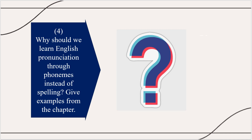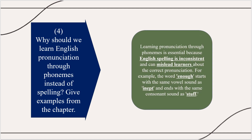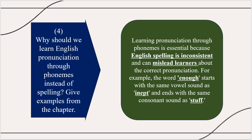Why should we learn English pronunciation through phonemes instead of spelling? Learning pronunciation through phonemes is essential because English spelling is inconsistent and can mislead learners about the correct pronunciation. For example, the word 'enough' starts with the same vowel sound as 'inept' and ends with the same consonant sound as 'stuff.'